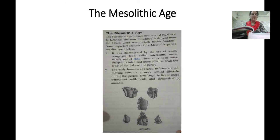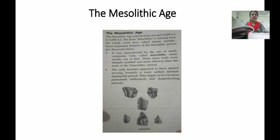These stone tools were sharper, more pointed, and more effective than the tools of the Paleolithic period. In the Mesolithic period, people had become more advanced and made stones into very well-crafted microliths — very pointed and sharp. Early humans also appear to have started moving towards a more settled lifestyle during this period, beginning to live in more permanent settlements and domesticating animals.